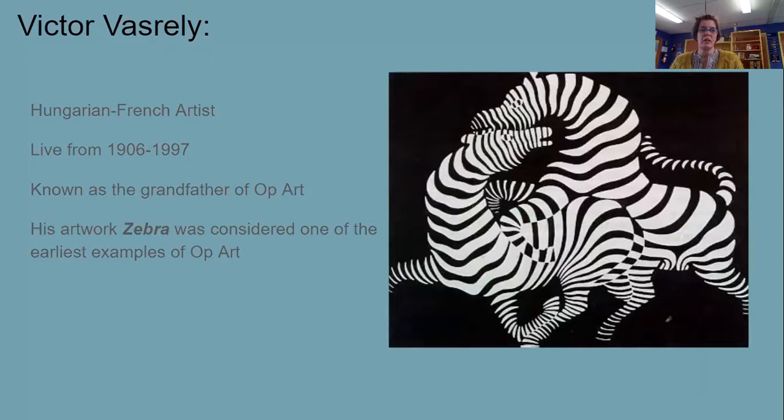Victor Vasarely was a Hungarian French artist. He lived from 1906 to 1997 and he was known as the grandfather of op art. And this is one of his earliest images and examples of op art. It's called Zebra.